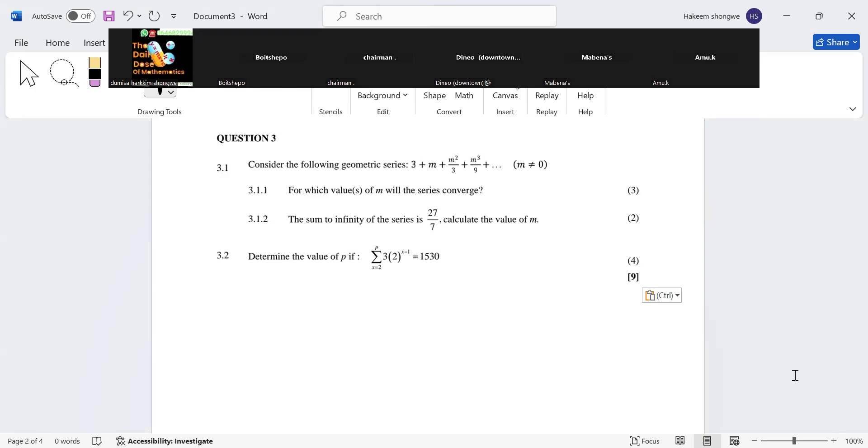So here we are going to check our convergence condition between minus one and one. We need to calculate our r first. What is r? You said t2 divided by t1, yes. He says r is going to be equal to m all over 3.